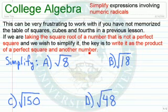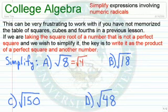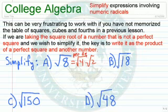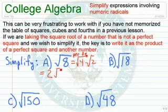Let's take some examples. The square root of 8. Notice that if we could rewrite this as the square root of 4 times the square root of 2. Now 4 is the perfect square, so we want to get in the habit of doing that. What is the square root of 4? 2. So our final answer — we bring down — 2 times the square root of 2. Notice we have a perfect square and another number.